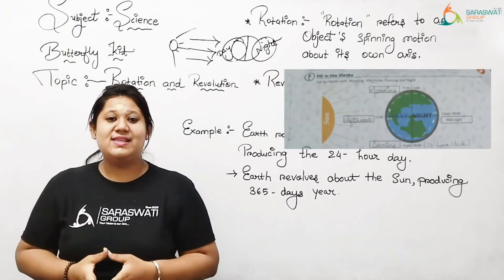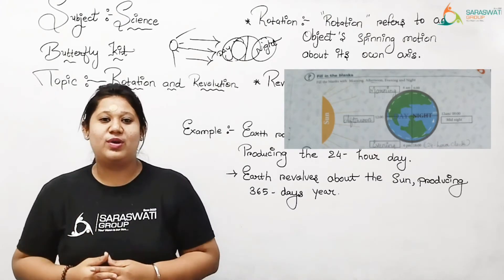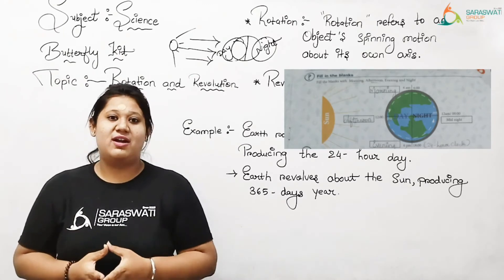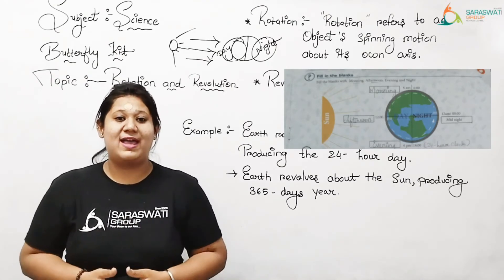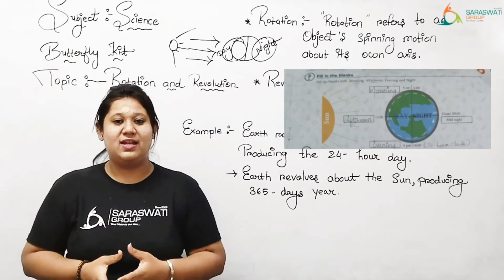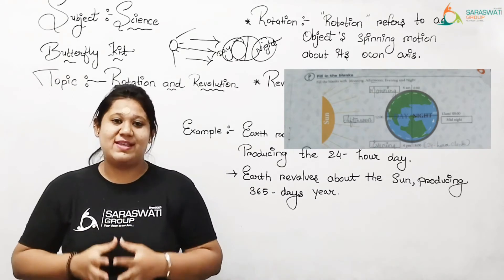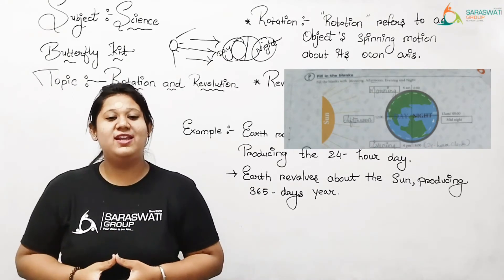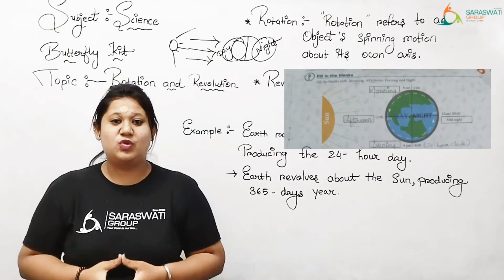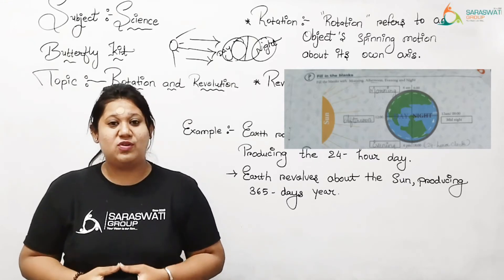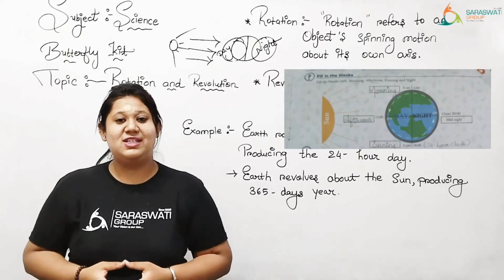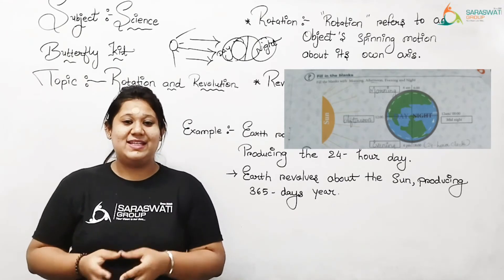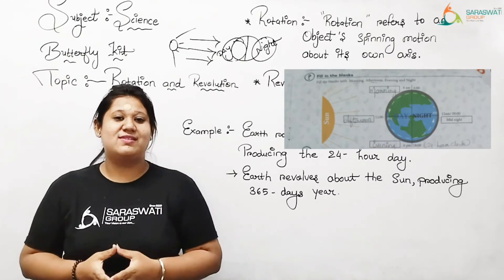We can see that 1 o'clock is 1 o'clock in a 12-hour day. But in a 24-hour clock, we consider 1 o'clock as 13, 2 o'clock as 14, 3 o'clock as 15, 4 o'clock as 16, 5 o'clock as 17, 6 o'clock as 18. This is a continuous process.